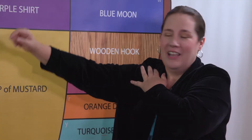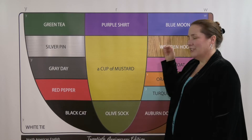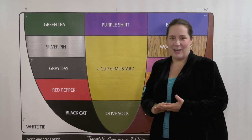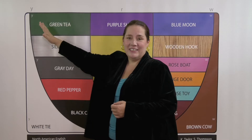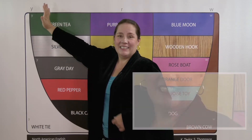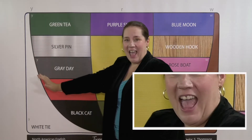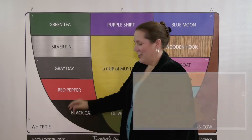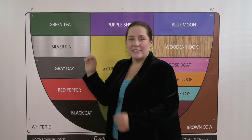As I move my jaw down and around, you'll see that we produce different vowel sounds. Let's give it a try — start at green 'tea' and come down with me. Black cat, ah.